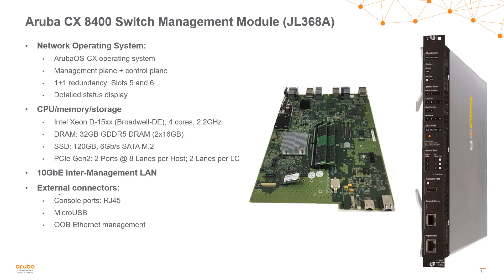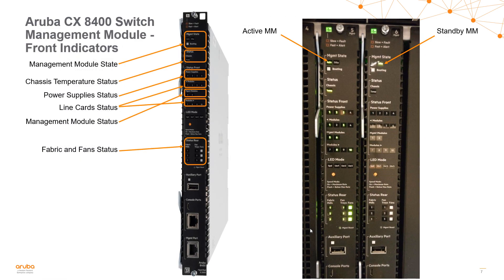The management module runs the CX operating system and controls the management plane and control plane of the switch. It supports 1+1 redundancy in slots five and six of the switch. There's a detailed display visible on the management module. Internally it uses a Broadwell processor — four cores at 2.2 GHz with 32 GB of DRAM and a 120 GB solid-state drive. For external connectors, we have an RJ45 console port, an RJ45 management port, and a USB port. The indicators on the front show which management module is active, which is in standby, as well as information about the power supplies, LPUs, and fabrics.